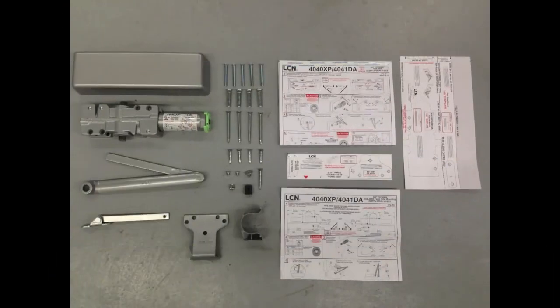In the box, you will find the Closer, regular arm, parallel arm bracket, rod and shoe, cover, screw pack, instruction sheet, and stick-on template.